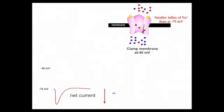The first point is that while there is still a large influx of sodium at minus 40 millivolts, the amount is less than it was at minus 75 millivolts. The reason is that there is less driving force on sodium because the inside of the cell is less negative. Since the concentration force is the same, and the electrical force — the negativity attracting sodium into the cell — is now reduced, there is a smaller influx of sodium ions at minus 40 millivolts than at minus 75 millivolts.